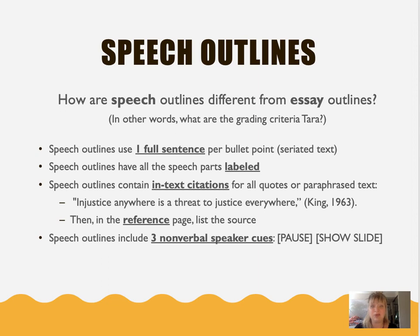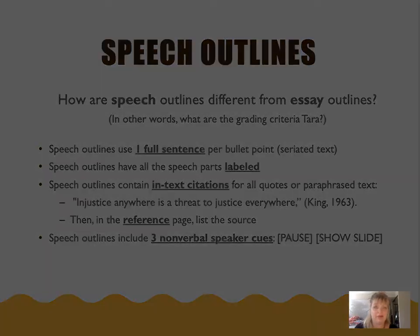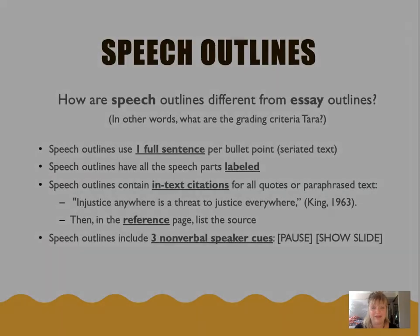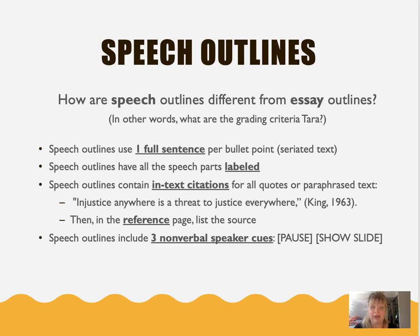Number three, in a speech outline, it's appropriate to include in-text citations for any quotes or paraphrased text that you might include from your outside academic sources. Simply place the full quote directly into the outline using an in-text citation in MLA or APA format. Then, on your reference page — or in the bibliography or works cited, there are a couple different names for those — you'll simply list the sources where you found the information you need to support your claims. Lastly, our speech outlines will all include at least three nonverbal speaking cues. I put these in brackets, or color code or highlight them off to the side in the outline — things like pause, slow down, show the slide, or ask the audience a question. This is where you're not inserting the actual text of what you plan to say, but instead some delivery directions that you want to keep in mind.